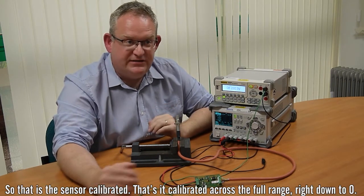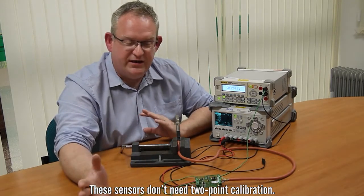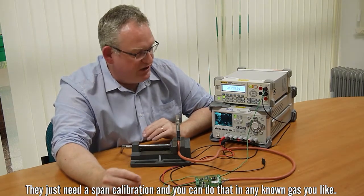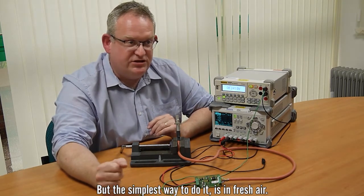So that's the sensor calibrated, that's it calibrated across the full range right down to 0. These sensors don't need 2 point calibration, they don't need a 0 or an offset calibration, they just need a span calibration and you can do that in any known gas you like, but the simplest way to do it is in fresh air.